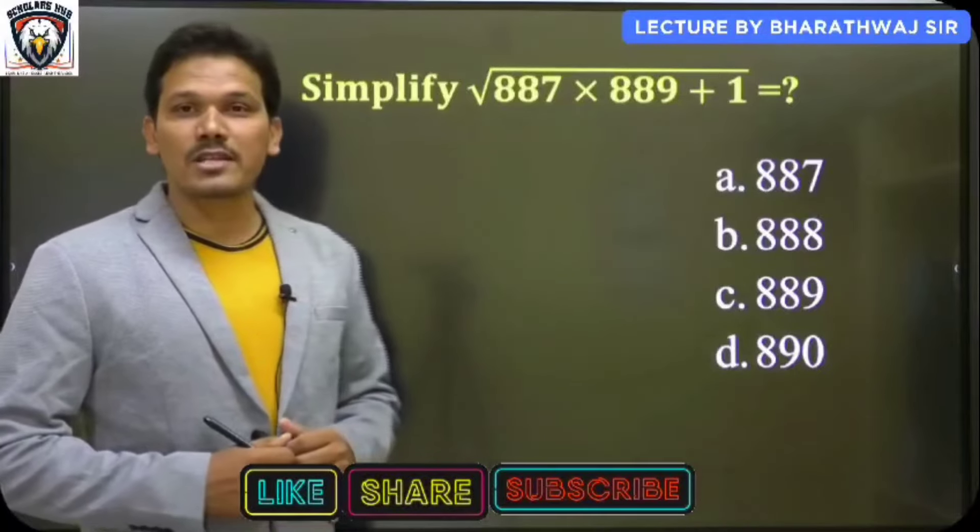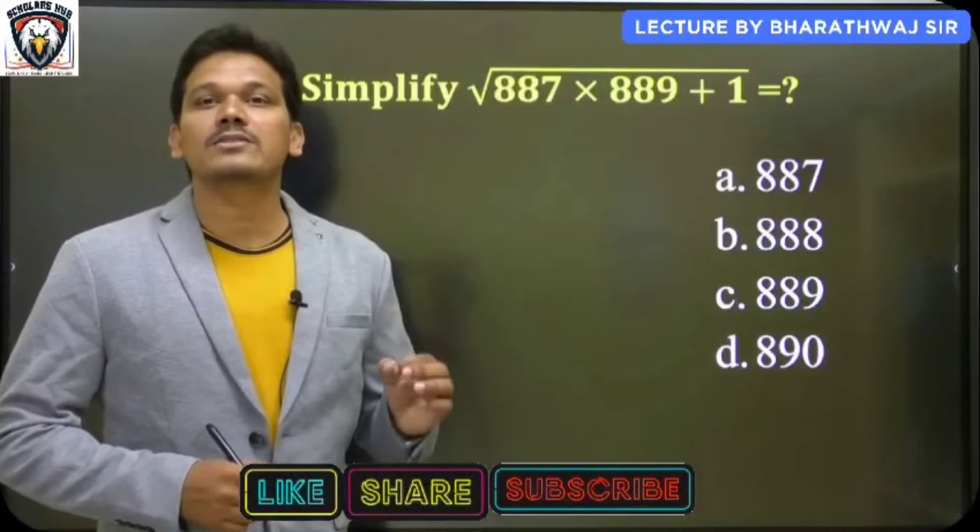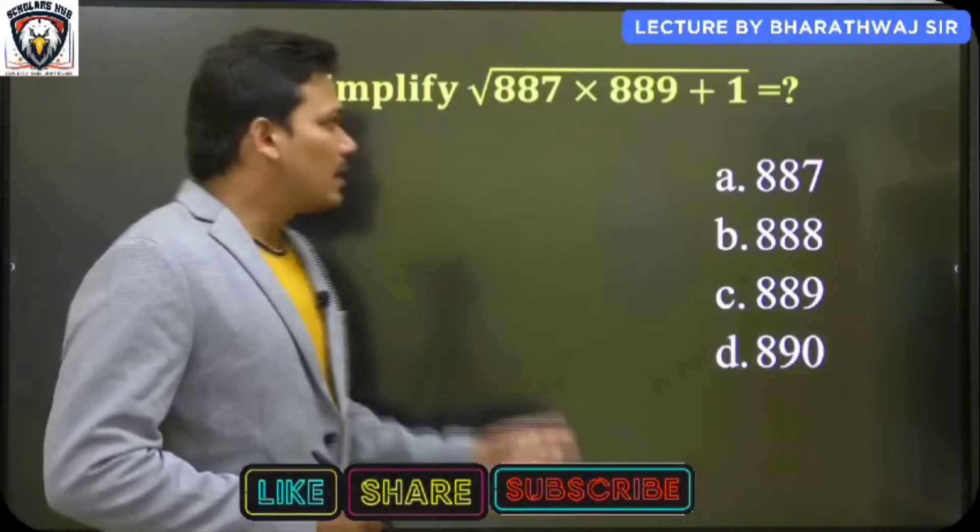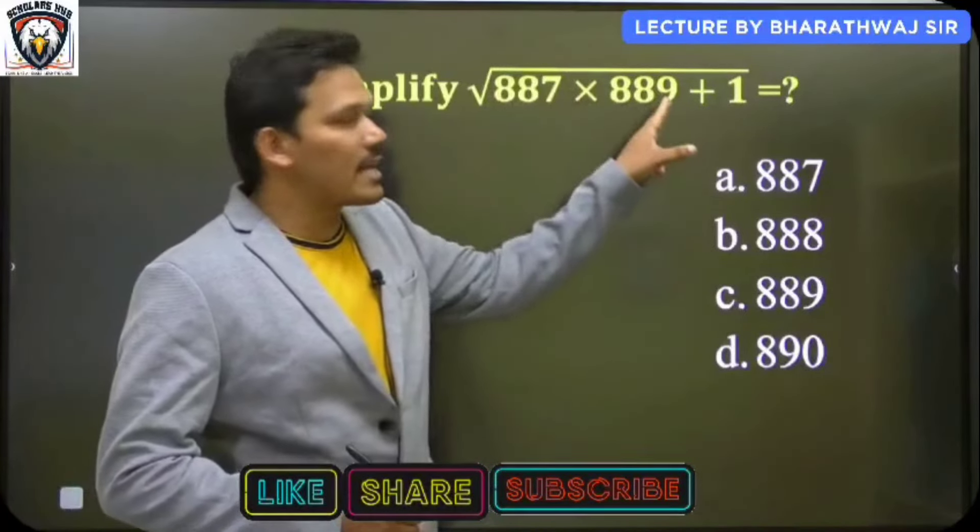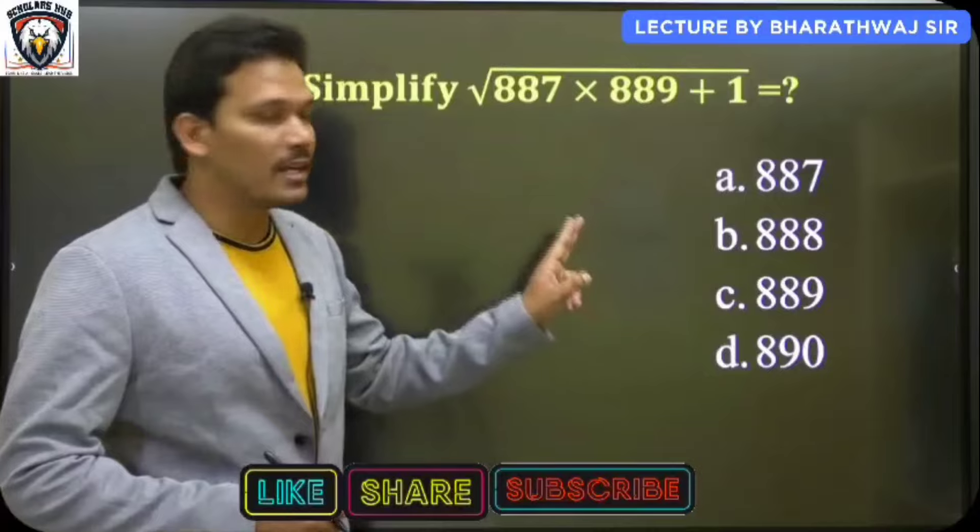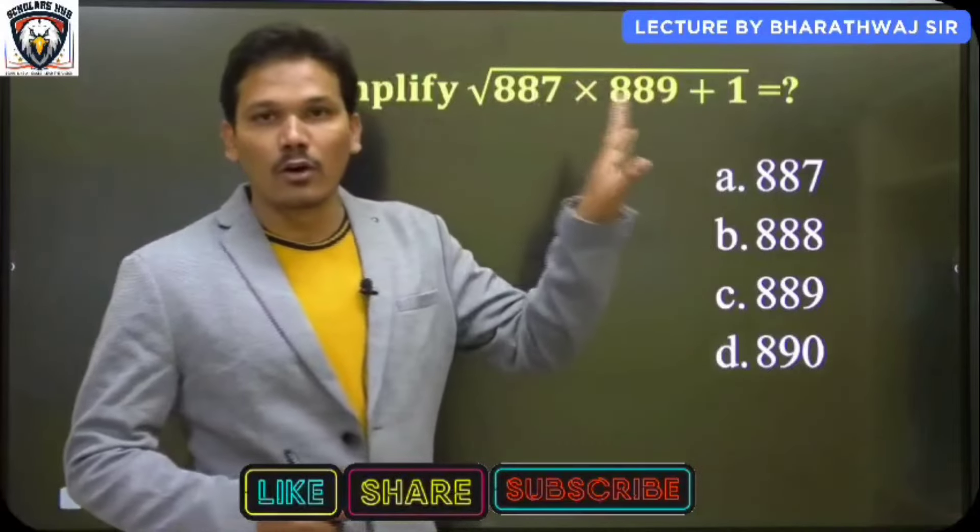Whenever you get such type of questions in the examination, our target is to find out the logic. So let's find out the logic. The first number given is 887 and the second number is 889. So one number is missing here and he is adding plus 1, then applying root.